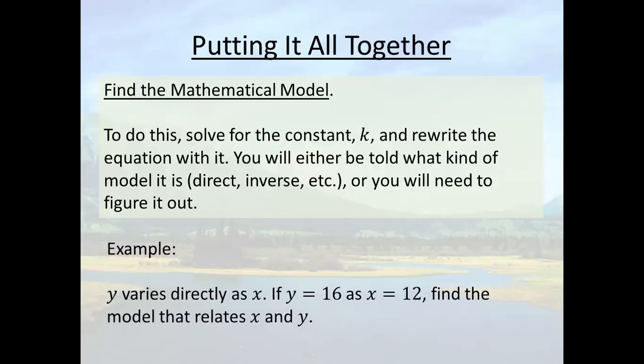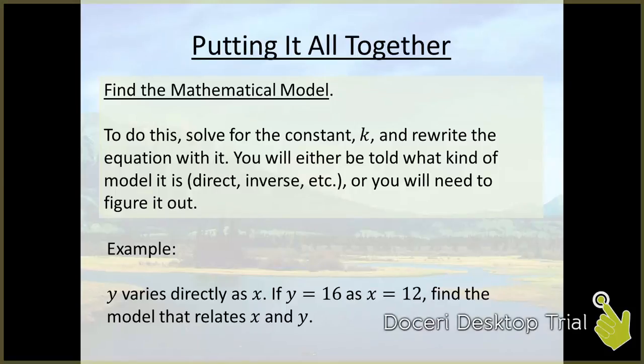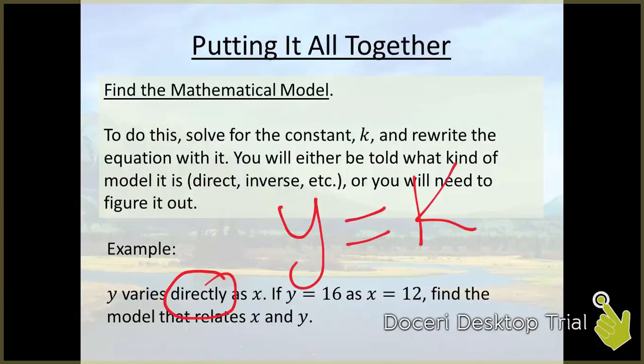This is an example. y varies directly as x. If y equals 16 when x equals 12, find the model that relates x and y. Okay, so right off the bat they tell us what type of relationship it is. It's direct. So that means we know that we're going to be using the formula y equals kx. We just need to figure out what that k is.